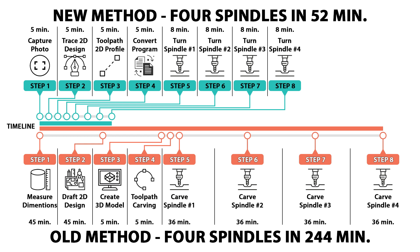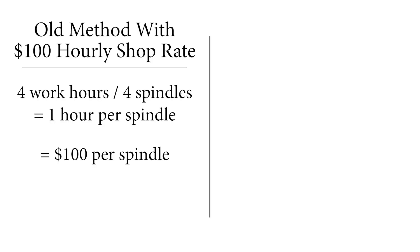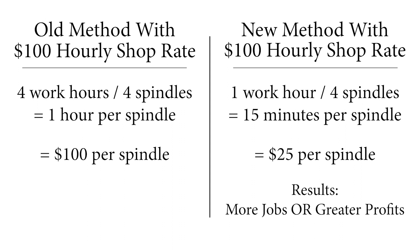Using the industry standard method of carving each spindle, it would take about 4 hours to design and complete 4 spindles. If your shop rate is $100 per hour, each spindle would sell for $100. Using Legacy's new turning method, it will take just less than an hour to complete 4 spindles. If your shop rate is $100 per hour, each spindle will sell for only $25. This new turning method clearly gives the Maverick CNC user a competitive edge.